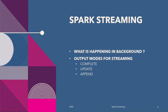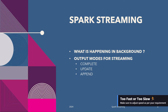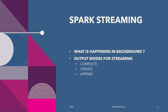Hello and welcome back. In our last video, we created our first Spark streaming application. We have seen how to read data from a socket and write the data in console. Today, we will understand what is happening in the background when Spark is executing its jobs in micro-batches. We will also see the different types of output modes such as complete, update, and append that Spark offers for its streaming applications.